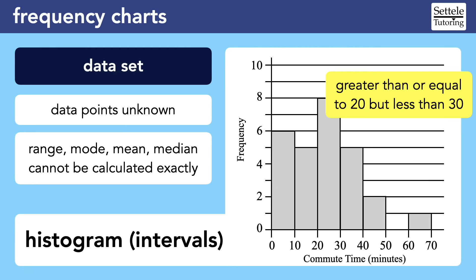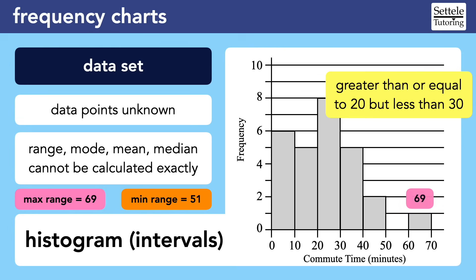The SAT uses interval histograms to force more complex thinking. For example, they could ask for possible values of the range. The maximum possible range would be 69, but the minimum possible range would be only 51. The rightmost bar represents values from 60 to 69, so the single data point there could be as high as 69 or as low as 60. To maximize the range, we want the first interval to include at least one zero, giving 69 minus 0 equals 69. To minimize it, all values in the first interval equal 9 — the highest possible — giving 60 minus 9 equals 51.